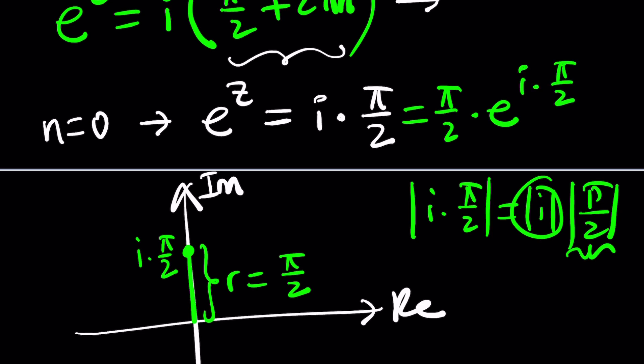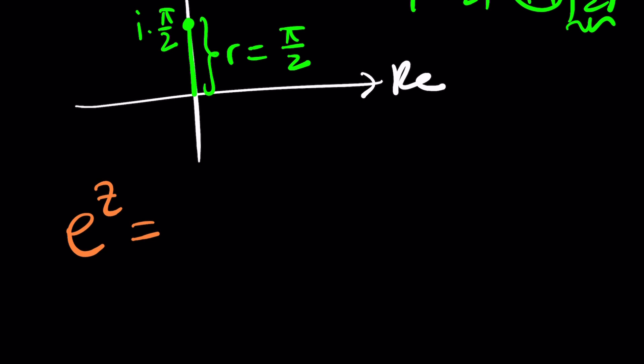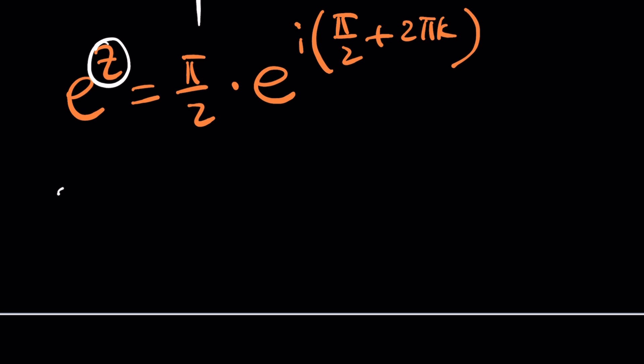But if you wanted to not keep it too simple, you're allowed to add multiples of 2π, but this time let's just use 2πk, because we already used n. Now, what am I going to do with this information? Let's go ahead and take a look. e to the z equals π over 2 times e to the power i, and then another π over 2 plus 2πk. If you natural log both sides, you're going to get z. z is going to be ln(π/2) plus i times (π/2 + 2πk).